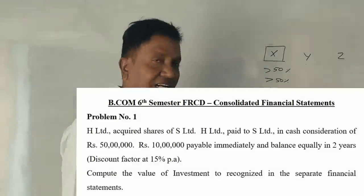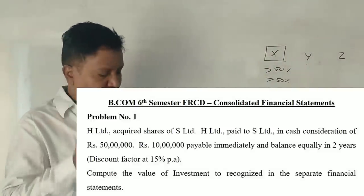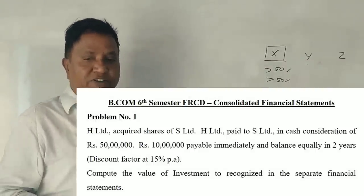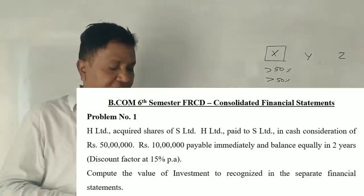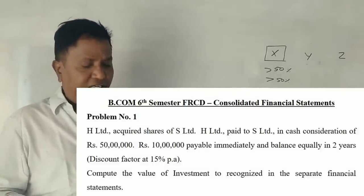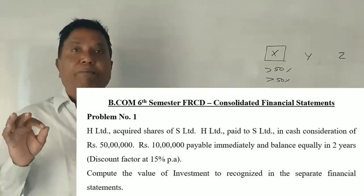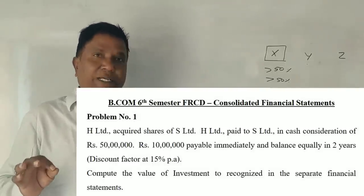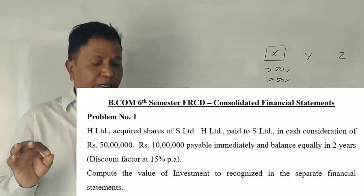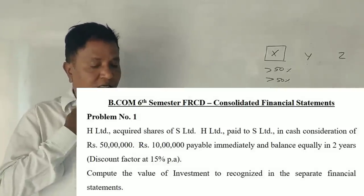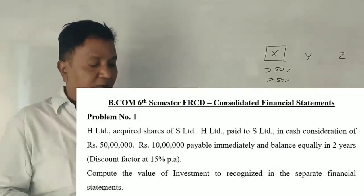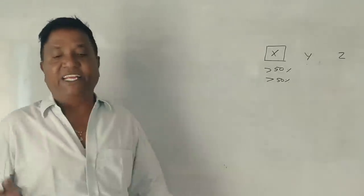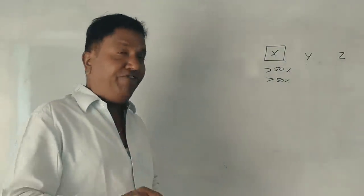Y company shares more than 50% — paid up share capital. The consideration is 10,000 rupees payable immediately and the balance payable equally in 2 years. Discount factor at 15% per annum. Compute the value of investment to recognize in separate financial statements.